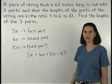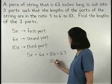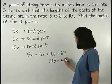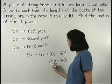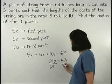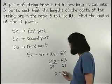Simplifying on the left side gives us 21x equals 63 and dividing both sides by 21, x equals 3.